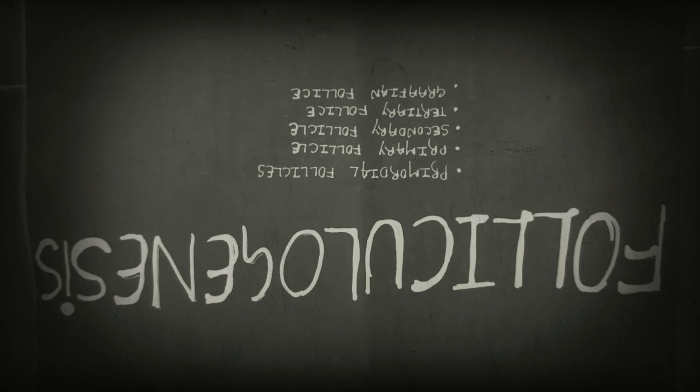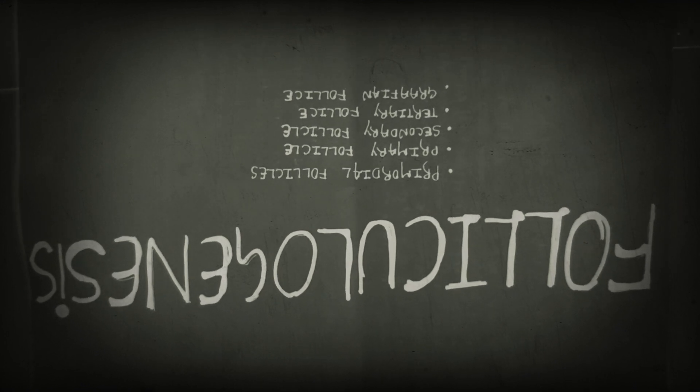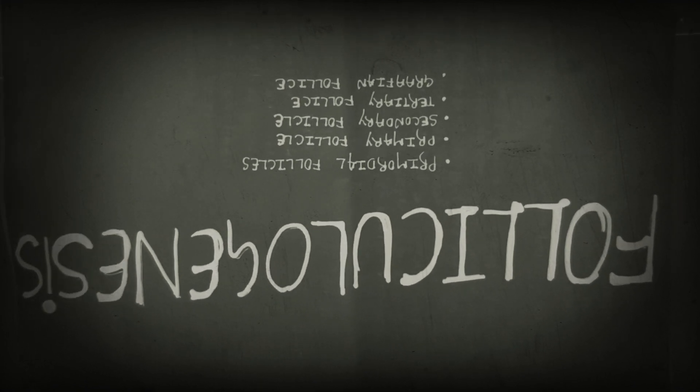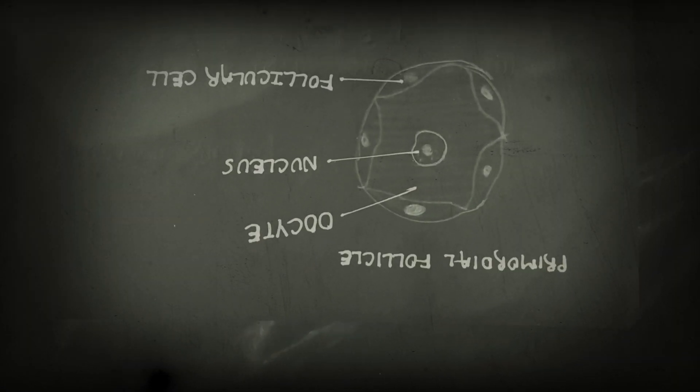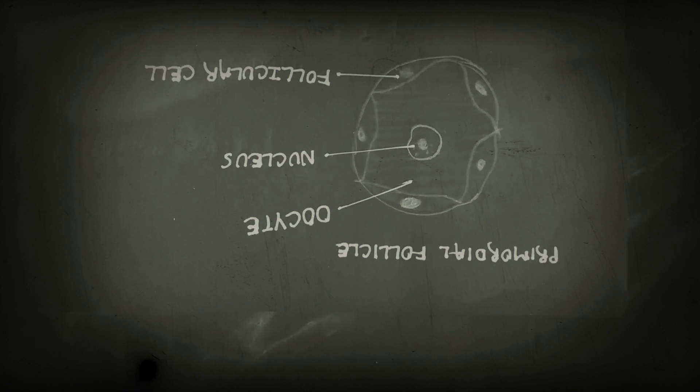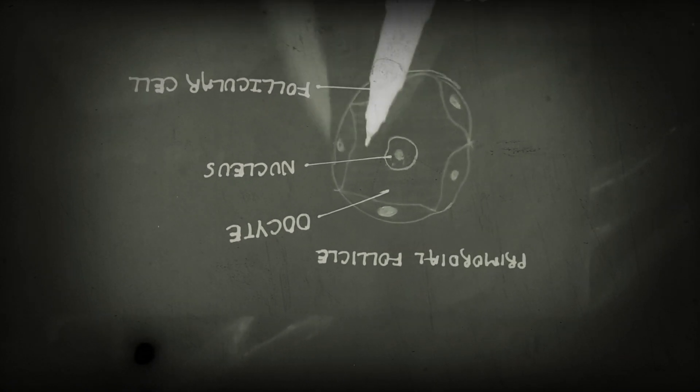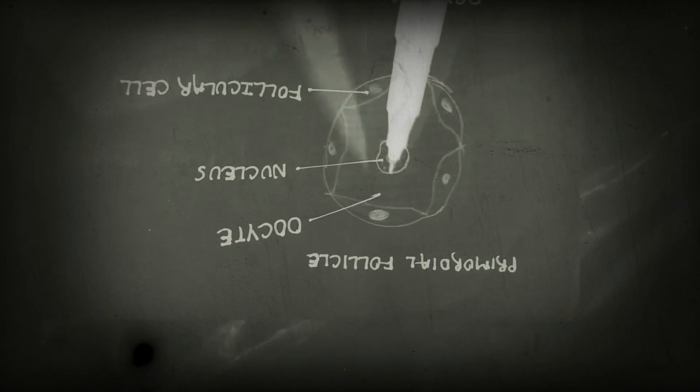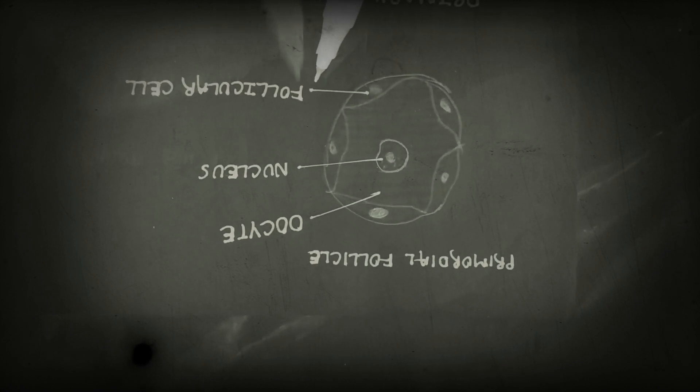After these stages, it becomes a mature Graafian follicle. First, let's talk about primordial follicles. Primordial follicles are the initial follicles. Primordial follicles have an oocyte nucleus and follicular cells.